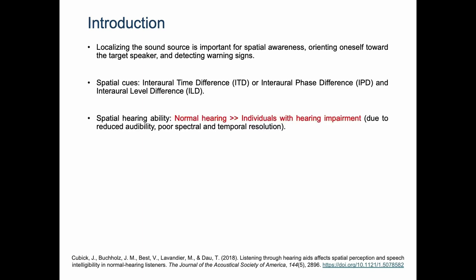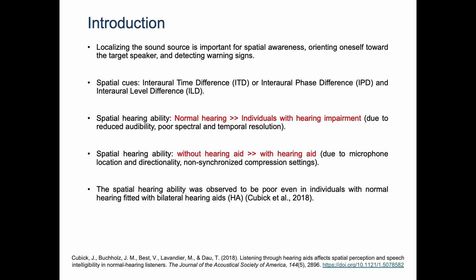Previous research studies have evidenced that spatial hearing ability is affected in individuals with hearing impairment compared to normal hearing individuals. To compensate for the loss of audibility, the fitting of bilateral hearing aids is a common practice among audiologists, but even with bilateral hearing aids, restoring spatial hearing ability is challenging.